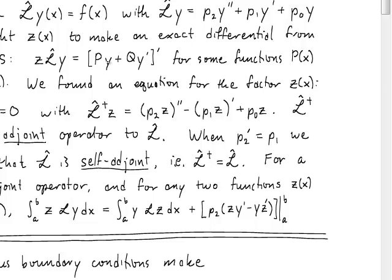Now in looking for this function z, we found that it had to have the property that L dagger z is equal to 0. This is in fact the equation that defines this integrating factor, if you will, for our second order partial differential equations.